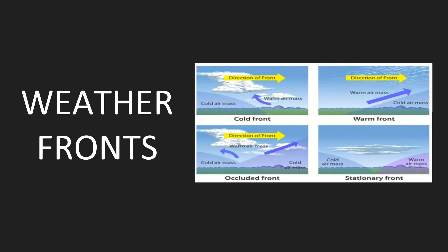Today we're going to be talking about weather fronts. We started with air masses. When two air masses come together, they form what's called a weather front, where they hit each other. So we're going to talk about those today — the four major kinds: cold and warm, occluded and stationary.